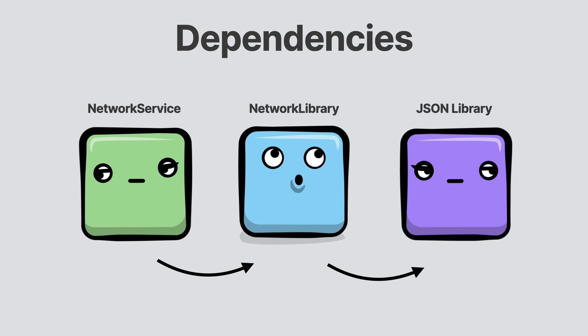For example, here we have a network service that depends on a networking library, which depends on a JSON encoding and decoding library. This is a direct dependency graph.